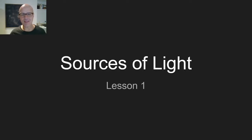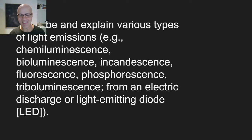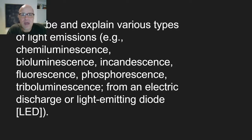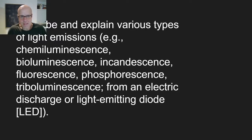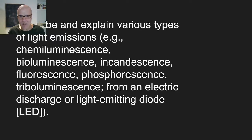Lights are the light of my life, and that's what we're going to learn about them — Sources of Light. So what are they? The curriculum objective is here. We want to describe and explain various types of light emissions, e.g. chemiluminescence, bioluminescence, incandescence, fluorescence, phosphorescence, triboluminescence, from an electric discharge or light emitting diode (LED). That is what we're going to learn about. Let's go look at the first one without further ado.